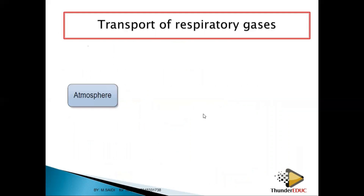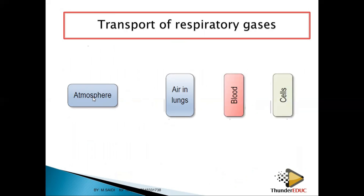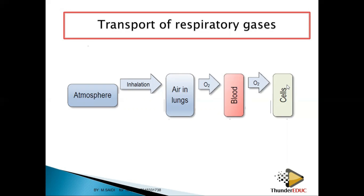To summarize this mechanism: you have the atmosphere, the lungs, the blood, and the cells. Air from the atmosphere goes to the lungs, to the blood, and to the cells. During inhalation, air is dragged into the lungs. Oxygen is taken from the lungs to the blood through diffusion, and then from the blood vessels to the cells, still through diffusion, to carry out respiration.